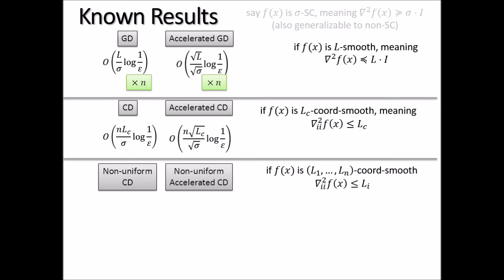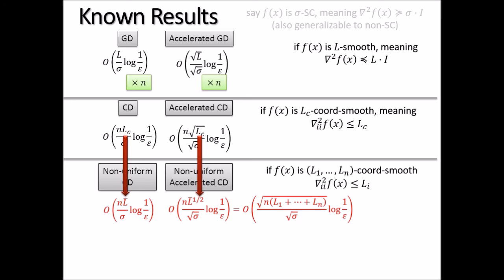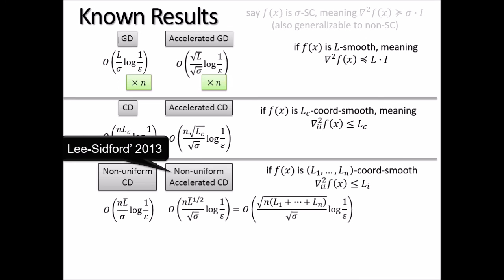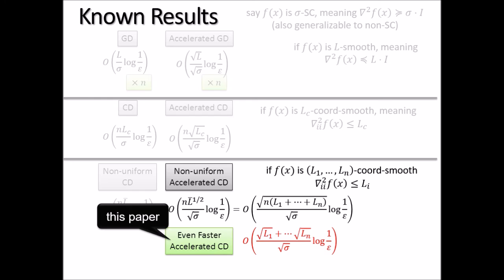In the non-uniform case, people had already derived results for both coordinate descent and accelerated coordinate descent by replacing the maximal upper bound L_c with the average. NASCAR proved the accelerated case and SITFOR proved the non-accelerated case. For at least two years, even some original authors believed this line of research was complete. What we found is that there is one last thing to prove: an even faster accelerated coordinate descent. We obtain a running time where the numerator involves the sum of square roots of the smoothness parameters, which can be another sqrt(n) factor faster than the state of the art.